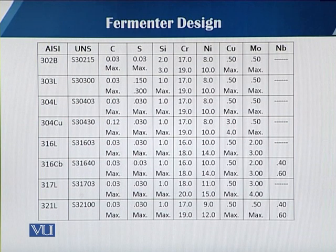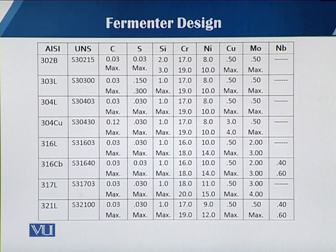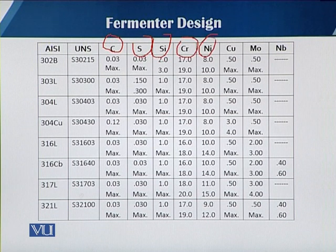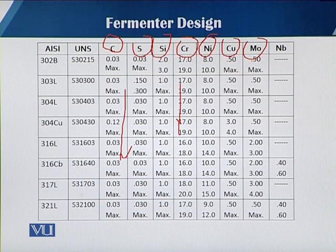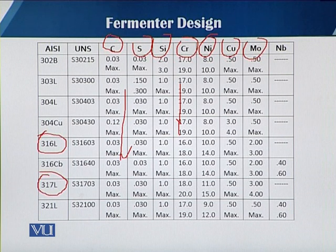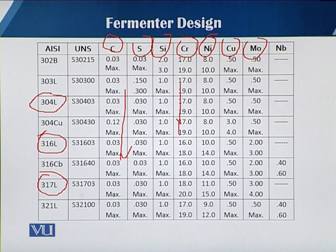In this slide you can see the different compositions for grades 302, 303, 304, 304 copper, 316L, 316CB, and 317L, showing the percentage of carbon, sulphur, silicon, chromium, nickel, copper, molybdenum, and others. The most critical grades are 316 and 317, which are mostly used in fermenters. Lower quality or cheaper fermenters may use 304 grade, while high quality fermenters use only grade 317.